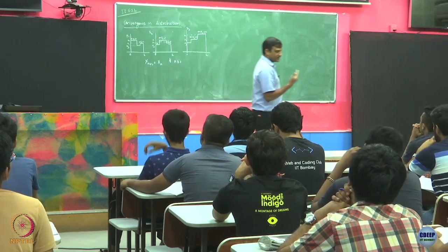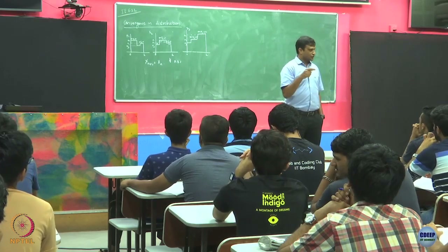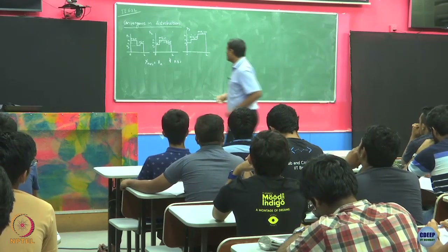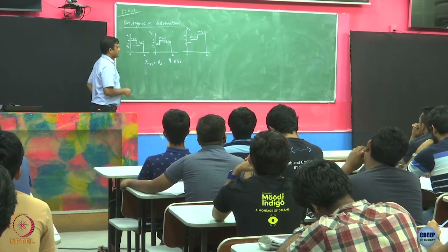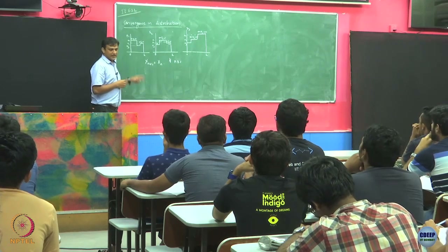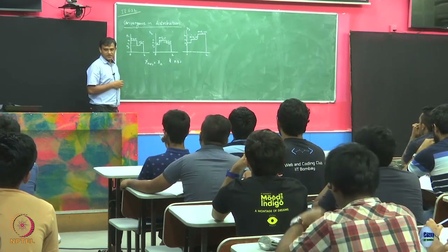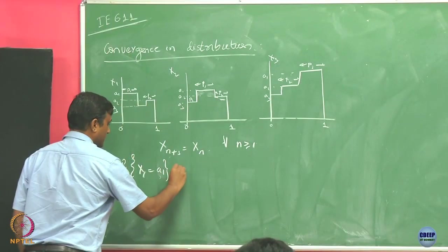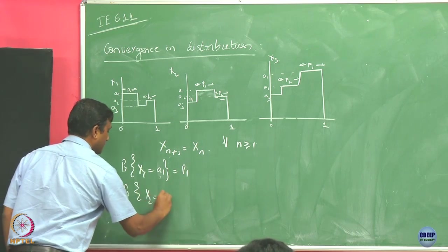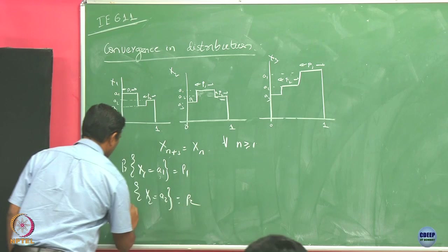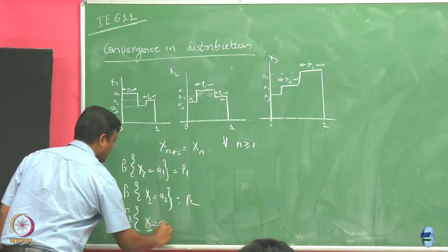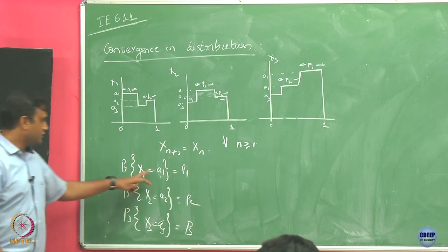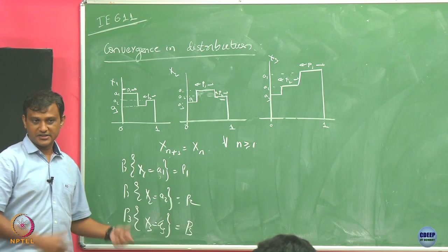This is where we want to understand convergence in distribution. We have to go beyond convergence in almost sure, convergence in probability, and convergence in mean square — we are interested in convergence in distribution. The limiting distribution here is a random variable that takes values a1, a2, a3 with probability p1, p2, p3. This is going to be my limiting distribution.